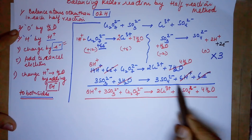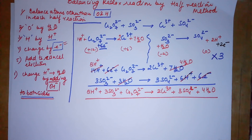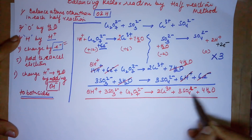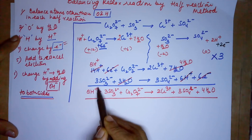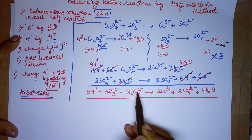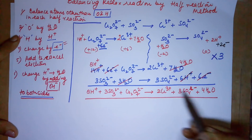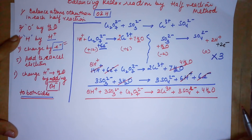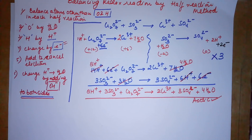Let's verify: hydrogens — 8 on the left, 8 on the right. Oxygens — 9 plus 7 makes 16 on the left; 12 plus 4 makes 16 on the right. Charge — left side: 8⁺ plus 6⁻ plus 2⁻ = 0; right side: 6⁺ plus 6⁻ = 0. The reaction is balanced. This is the answer for acidic medium.